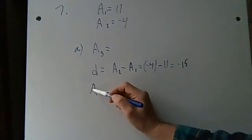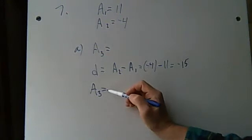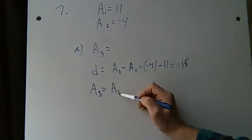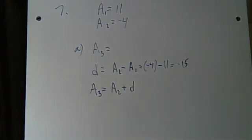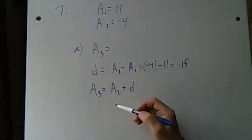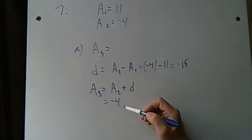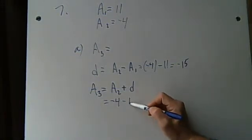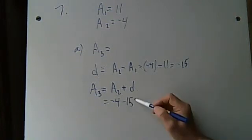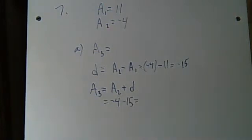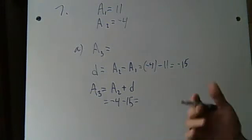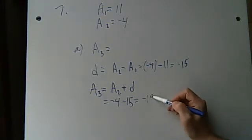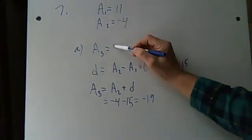So a3, for example, we could just say that's equal to a2 plus D. That's one way to get it. Now a2 is negative 4. D is negative 15. So if you have negative 4 and you take away another 15, you get all the way down to negative 19. So that's a3. a3 is gonna be negative 19.